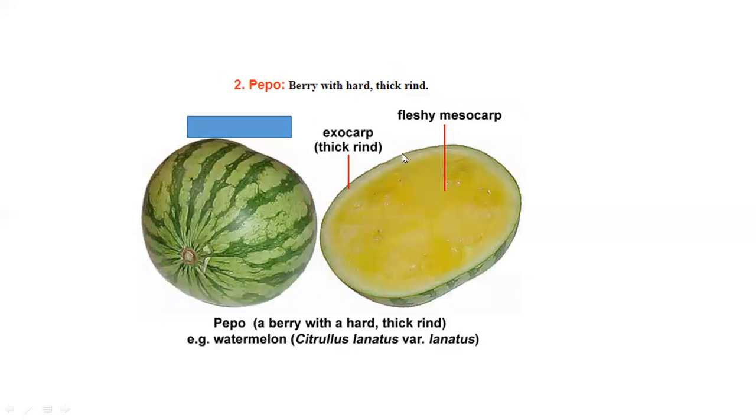This is pepo. Pepo is a berry with a very hard, thick rind. This is the exocarp, this is the fleshy mesocarp, and this thick covering is the rind. Examples include cucumber (Cucumis sativus) and watermelon (Citrullus lanatus).